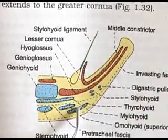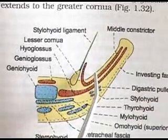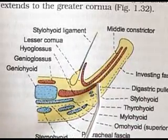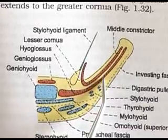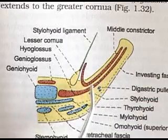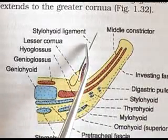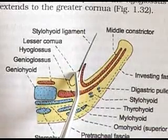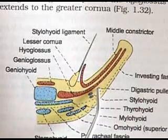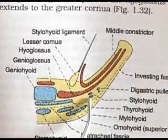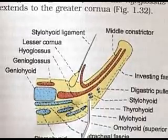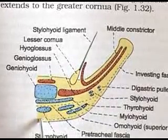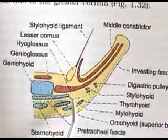Onto the greater cornua is the middle constrictor muscle, and inferior to that is the hyoglossus muscle, which is a muscle of the tongue. Attached to the lesser tubercle is the stylohyoid ligament, which is from the second pharyngeal arch, along with the digastric pulley and the two attachments of the stylohyoid muscle. It also gives attachment to the investing layer of cervical fascia and the pre-tracheal fascia.